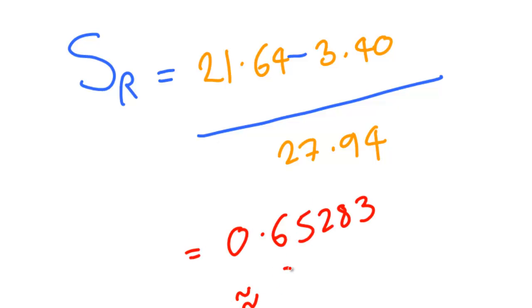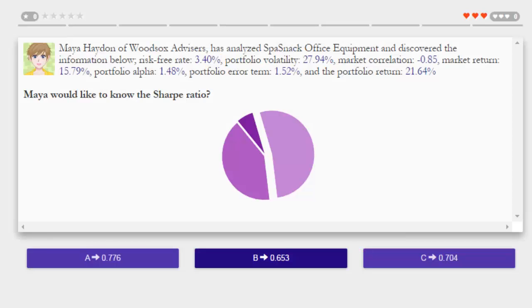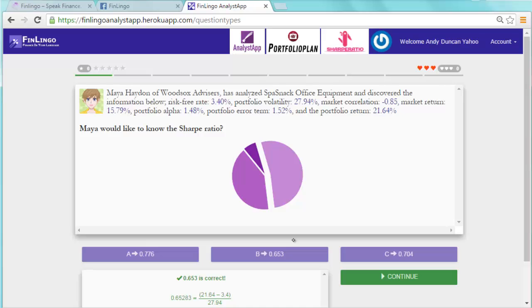Going back to finlingo.com, let's pick out the correct answer. And here's something to remember with the Sharpe Ratio. The higher it is, the better it is. You're getting more return for less risk.